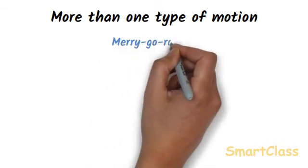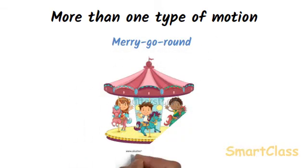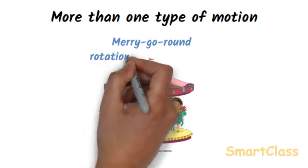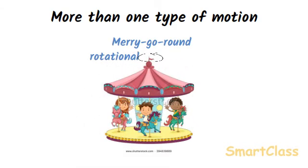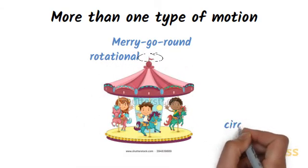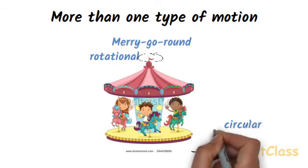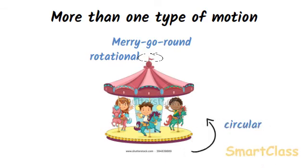Merry-go-round. If we consider merry-go-round as a whole, then it shows rotational motion because it turns on an axle. But the outer part of merry-go-round shows circular motion. In this way, merry-go-round has two types of motion at the same time.